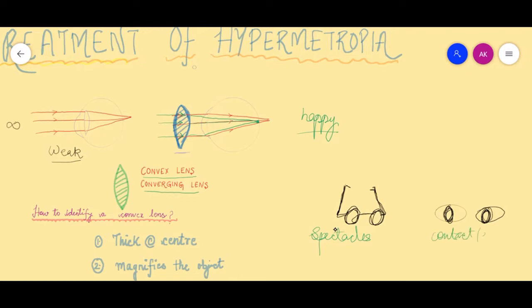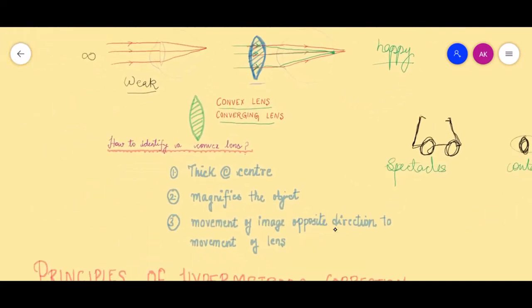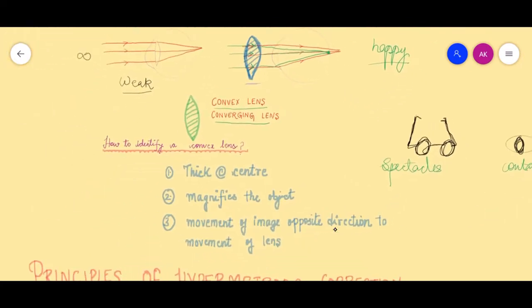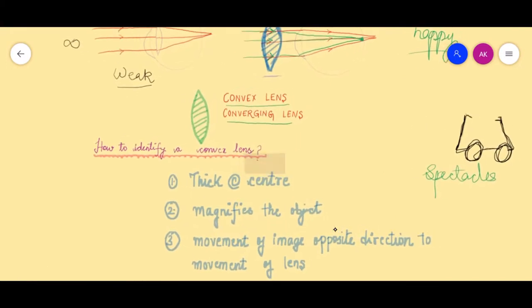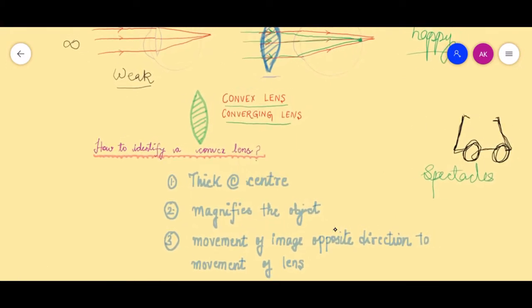The next question is how do you actually identify a particular lens — how do you know whether it is a convex lens or a concave lens? The identifying features of a convex lens: number one, a convex lens is thicker in the center and thinner at the periphery.